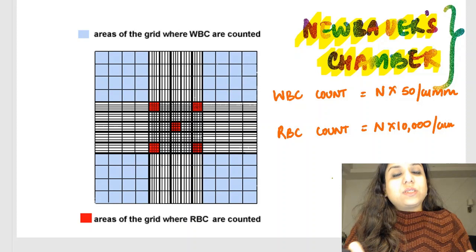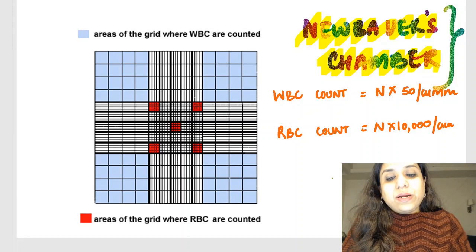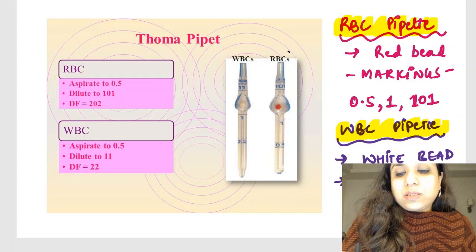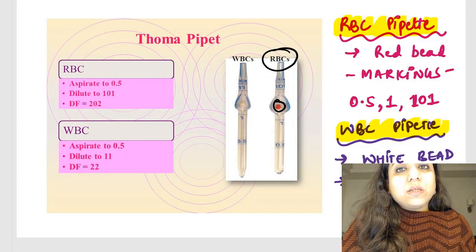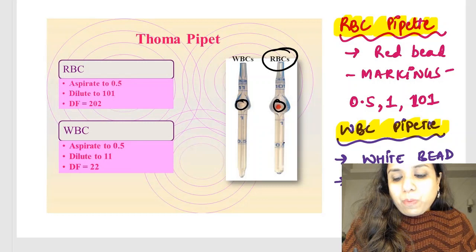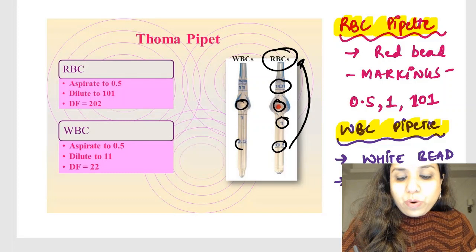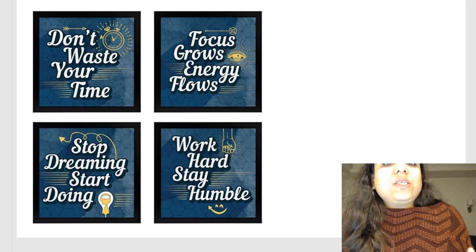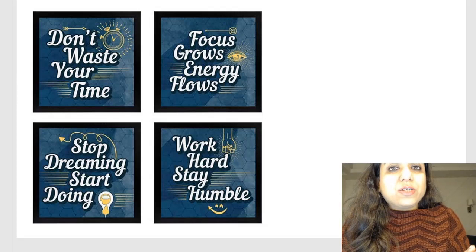This image is also very important — this is an improved Neubauer chamber which we use in our labs. These are the two pipettes used: this is the RBC pipette — R for RBC, red blood cell — it has a red bead inside. The white blood cell pipette has a white bead inside. Also, RBC count is more than WBC count, so when you see the markings 0.5, 1, and 101, these are the markings of the RBC tube, whereas 0.5, 1, and 11 are the markings of the WBC tube. With this, I finish off with the important slides from the RBCs and some miscellaneous slides which can be asked in your exams.